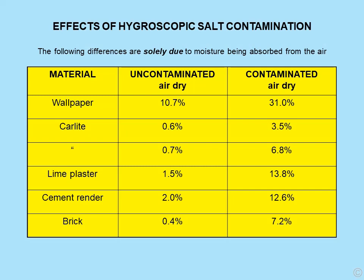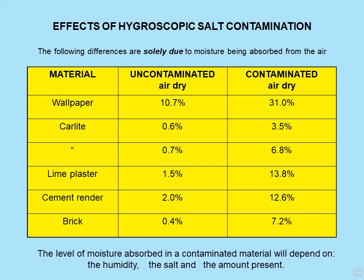Basically, the more contamination, the greater the salt content and moisture concentration. Looking at higher examples like lime plaster and cement render, those would be visibly damp. A red brick at the bottom at around seven percent moisture content would look distinctly red. The level of moisture absorbed in a contaminated material depends on the humidity, the salt itself, and the amount present.